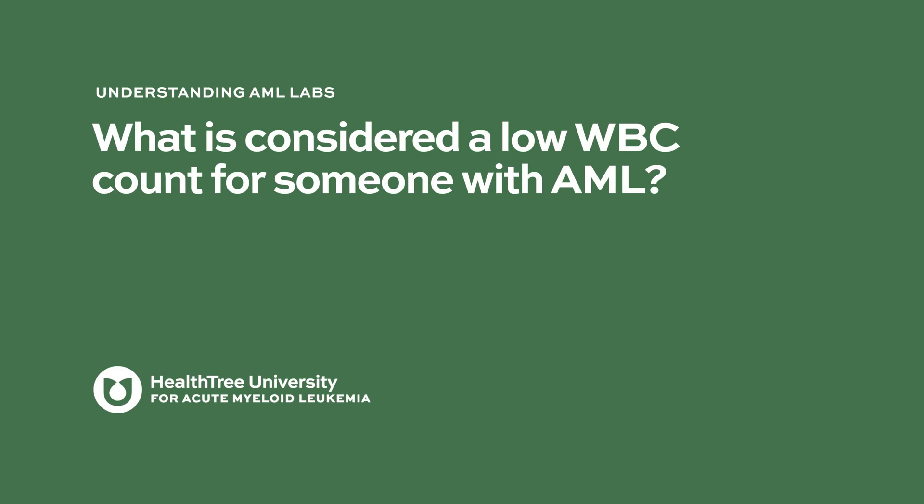What is considered a low white blood cell count for someone with AML? It really depends on the laboratory. Most labs have a normal range of about 3,500 to 10,000 cells per microliter. White blood cell counts outside that range could indicate an underlying problem with your bone marrow. Typically when the white blood cell count is less than three we consider that low, but really focusing on that neutrophil count is important.